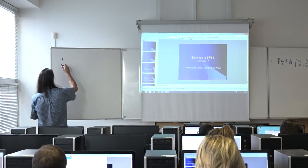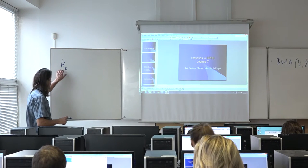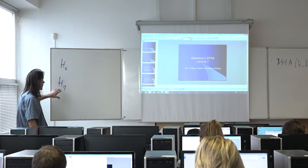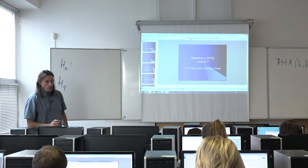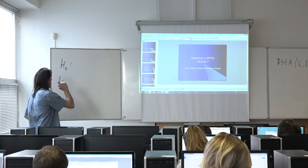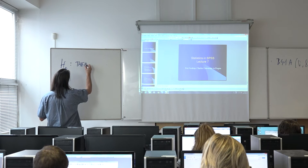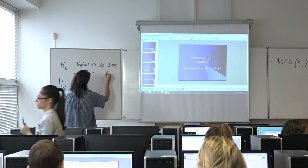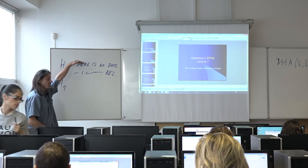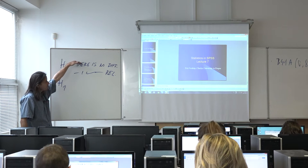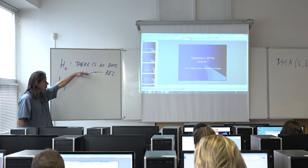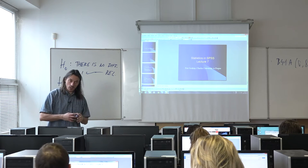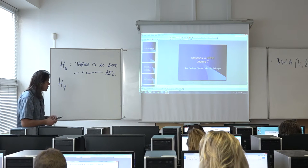The test usually consists of two competing hypotheses. The first one is called the null hypothesis, symbolized as H-null. The alternative hypothesis is described as H1. The null hypothesis usually says there is no difference or no relationship — so it is about zero difference and absent relationship.